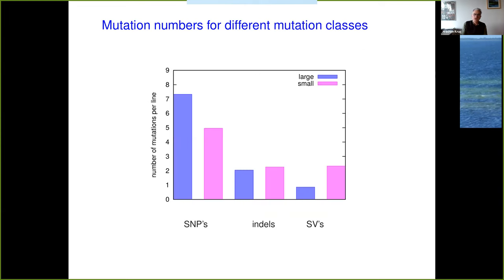Focusing on these different mutation classes, this histogram shows the number of mutations per line in SNPs, small-scale indels, and large-scale structural variants. There are notable differences: in the small populations, there are fewer SNPs and many more structural variants, hinting at the main storyline I want to get to.